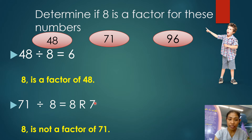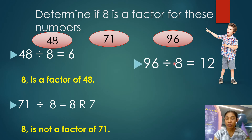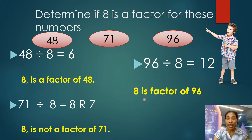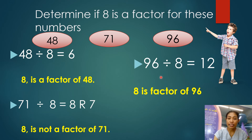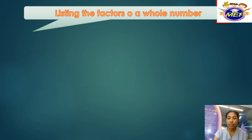Don't forget — a factor is a number that divides without a remainder. If there is a remainder, the number is not called a factor. The last one: 96 divided by 8 equals 12. There is no remainder, so 8 is a factor of 96. To recap: 8 is a factor of 48, 8 is not a factor of 71, and 8 is a factor of 96.